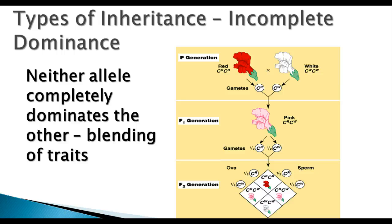Now let's talk about things that are different from what Mendel learned. Mendel studied seven different traits of pea plants and was very fortunate in the ones he chose — those traits always behaved with simple dominance. But looking at other traits in other organisms, there are some that don't work out the same way. These are exceptions to Mendel's laws — things he simply didn't learn about.